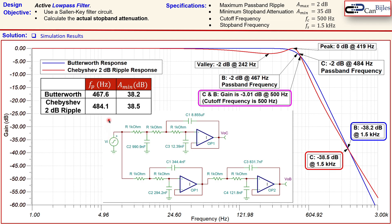In summary, both designs meet all specifications. The Chebyshev requires fewer components than the Butterworth, and actually achieves more attenuation at the stopband frequency. If the passband ripple is unacceptable, one can choose a smaller ripple Chebyshev — such as 1 dB, 0.1 dB, or another value. If absolutely no ripple is acceptable, the Butterworth response is the appropriate choice.